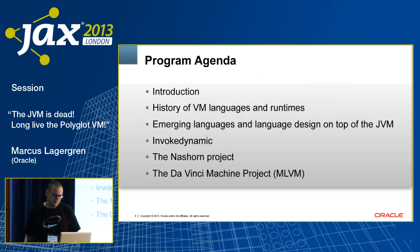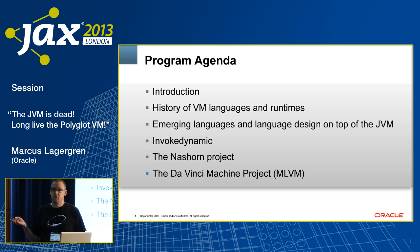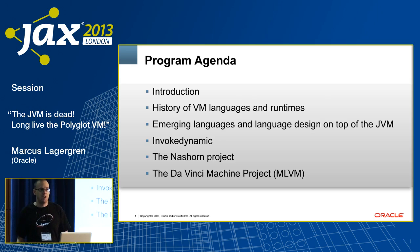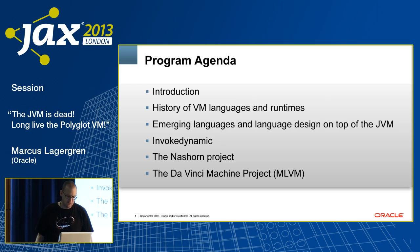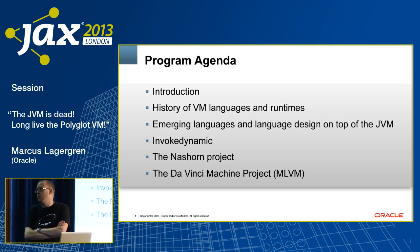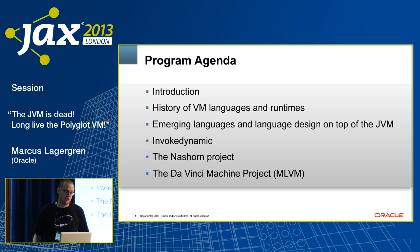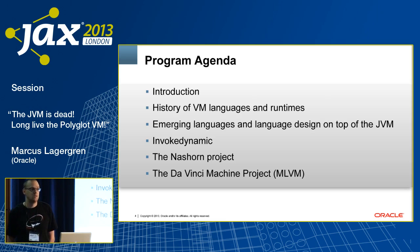The agenda today is: an introduction, dynamic languages, the virtual machine, where we're going, a history of JVM languages and runtimes — because it's always good to start with history, and I love excuses to show pictures of John McCarthy, the father of Lisp. Then we'll talk about emerging languages and language design on top of the JVM, and why we want to use the JVM as a language platform. And we'll talk about invokeDynamic, which is the single most important thing that's happened to the JVM since its inception when it comes to deploying things that aren't Java on it.